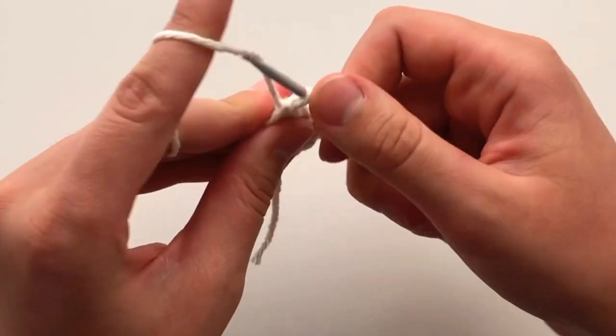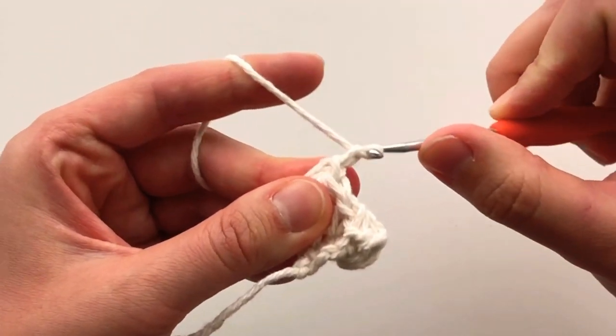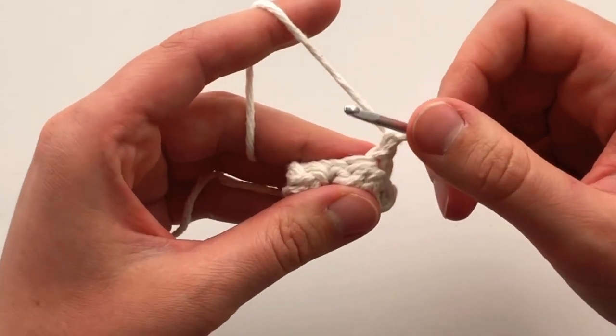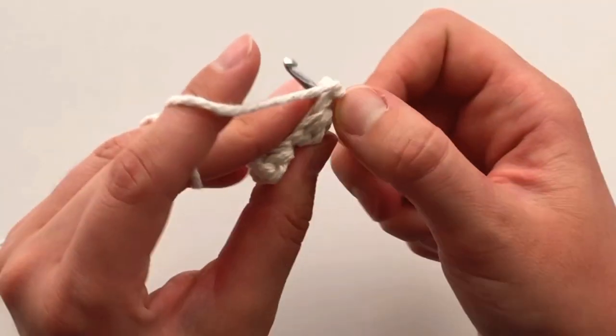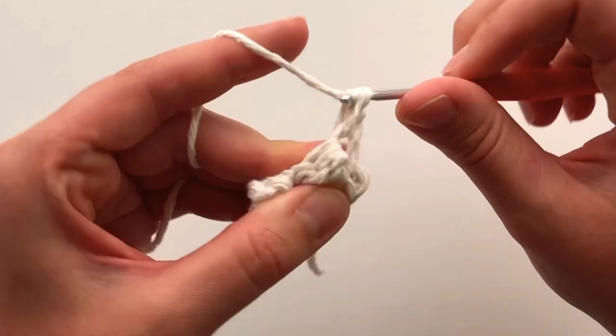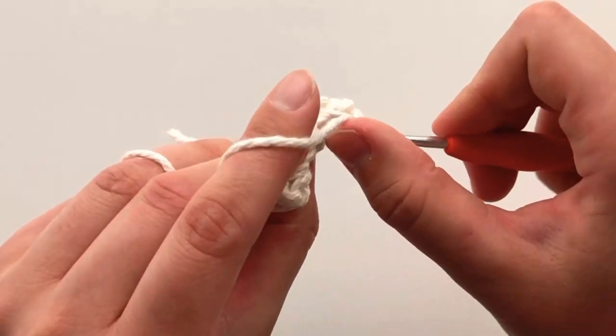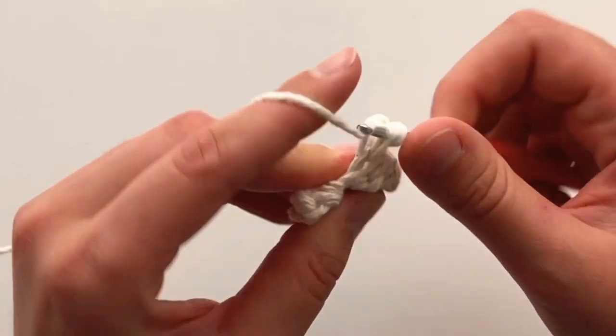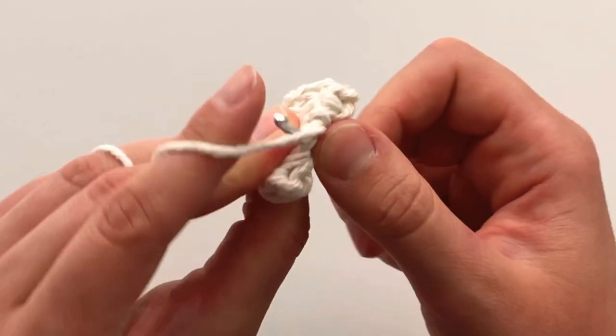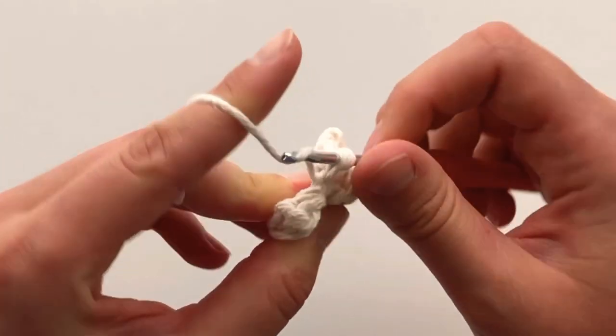Chain 1 and turn. We are going to repeat this now for a total of 35 rows, where we do a row of single crochets, and then another row with our modified bobble stitches. Pause your video here, and I'll meet you back when you've completed all of your rows.